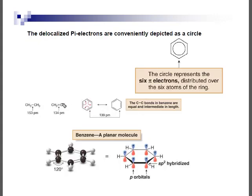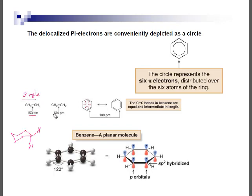All the hydrogens in benzene come off in the same plane. Unlike cyclohexane, where we had axial and equatorial bonds, benzene has all atoms in the same plane. For a carbon-carbon single bond, the bond length is 153 picometers; for a double bond, 134 picometers.